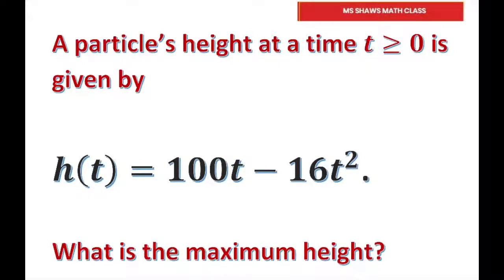We want to know what the maximum height is. The first thing we're going to do is take the derivative. When you take the derivative of this, you get h'(t) = 100 - 32t.